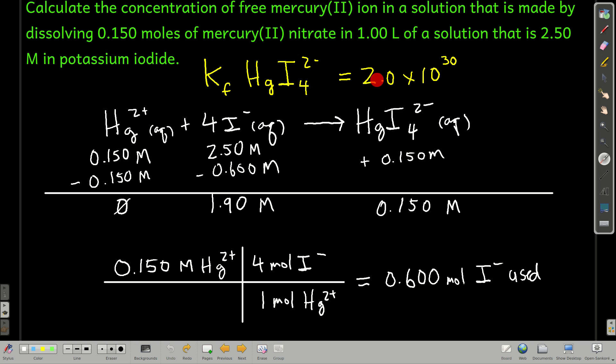Because the stability constants are so big, what we do is we assume, first of all, that all of the iodide reacts, or that the iodide reacts with all of the mercury(II). With no double arrow, just goes and makes this. And then what we're going to do is we're going to let it unwind and come to equilibrium. Because if we tried to do an ICE table right here and solve it as an equilibrium problem, we would have a quartic equation, and that's not good.